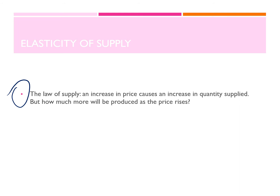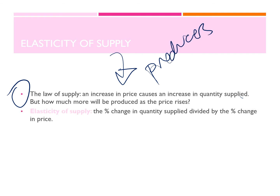But how much more will be produced as the price rises? So we are studying how suppliers react to a change in price — would they produce more or less? It is the same concept as PED, but instead of talking about how it affects buyers, here we are talking about supply — how it affects producers. Elasticity of supply is the percentage change in quantity supplied divided by the percentage change in price.